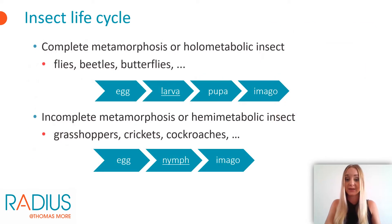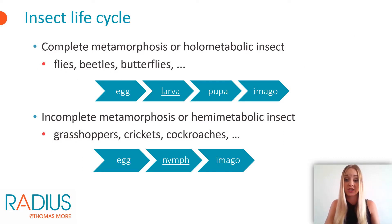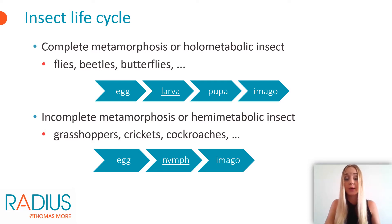The exoskeleton of insects cannot grow like human skin. So in order to grow, the insects must shed. Some insects, such as grasshoppers and crickets, for example, undergo an incomplete metamorphosis, with nymphs resembling the adult stages.